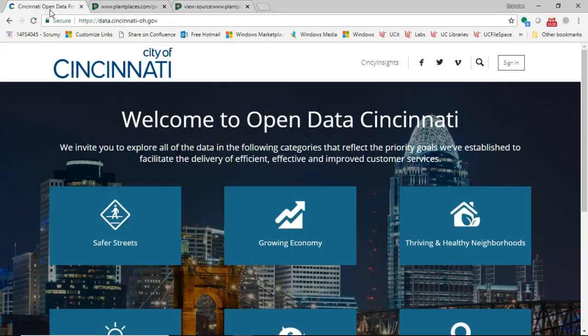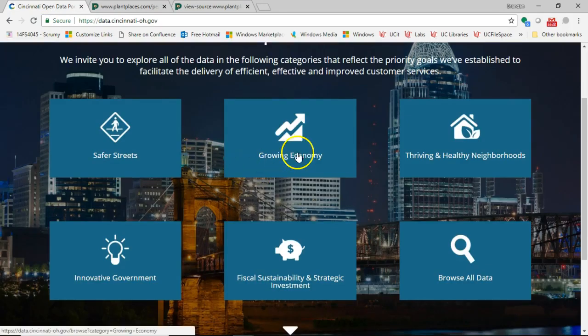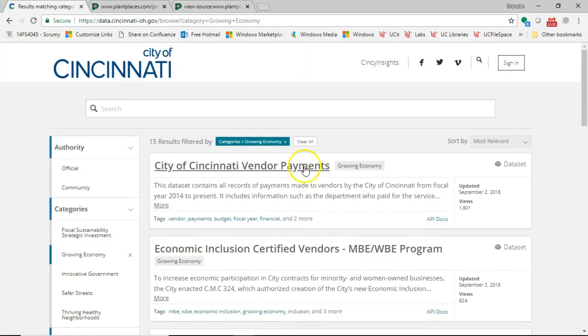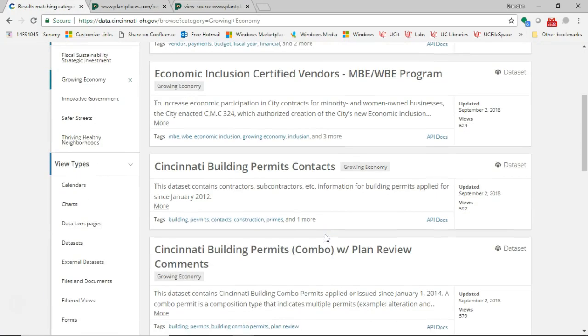Now, take a look at this, the Cincinnati Open Data Initiative. This is something you see in a lot of cities where they offer publicly available data that describes the city. So we could say building permit contracts. I'm just picking one out at random here. I click on the API documents here.